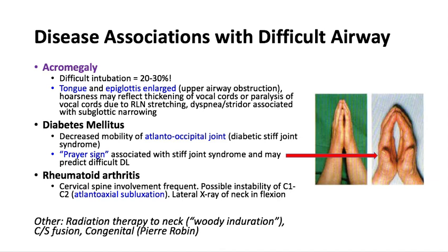Rheumatoid arthritis can involve the cervical spine with possible instability at C1–C2, called atlantoaxial subluxation. A lateral x-ray of the neck in flexion can help diagnose that. Other situations associated with a difficult airway include radiation therapy to the neck, where the anterior neck feels woody and indurated, leaving no space to displace the tongue during direct laryngoscopy, often resulting in grade 4 views. Cervical spine fusion and congenital diseases like Pierre Robin syndrome are also associated.